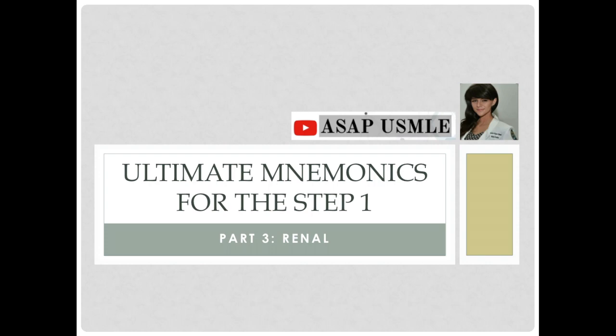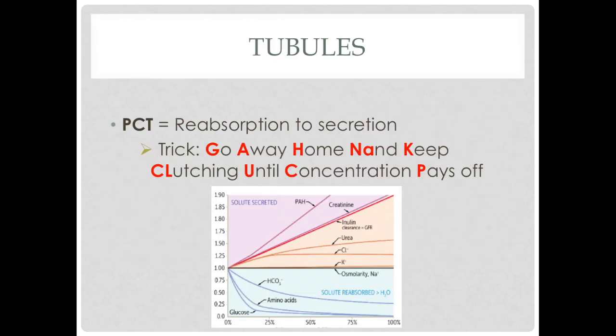That concludes the respiratory part. Moving on to part 3 of the ultimate mnemonics for the step 1, we're going to talk about the renal system. Regarding the tubules, we'll start with the PCT or proximal convoluted tubule. If you don't know the answer, pick PCT above all other tubules because it is most likely the correct answer — that is your best shot.